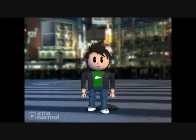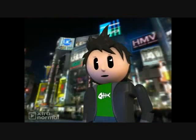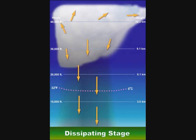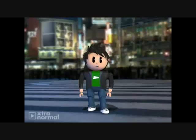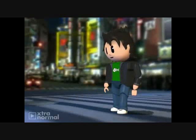This is called the dissipating stage, and this is when updrafts weaken as gust fronts move away from the storm. Downdrafts inside the cloud cut off the storm's fuel supply by destroying the humid updrafts. Deprived of humid air droplets, the clouds can no longer form and the thunderstorm dies out.